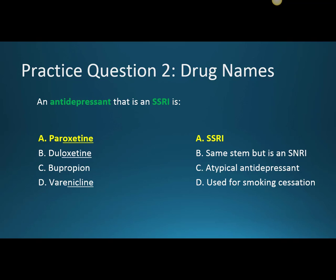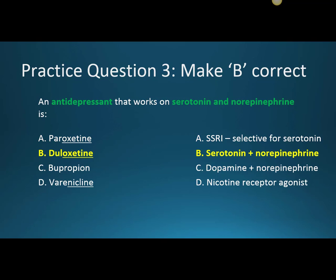Question three: An antidepressant that works on serotonin and norepinephrine is B, duloxetine. Duloxetine is an SNRI, so it works on both serotonin and norepinephrine. A is incorrect — paroxetine is an SSRI, which is selective for serotonin only. C, bupropion, is incorrect — it is an atypical antidepressant working on dopamine and norepinephrine. D, varenicline, is a nicotine receptor agonist and is not an antidepressant.